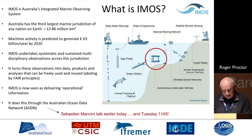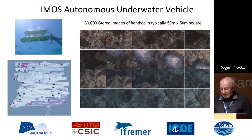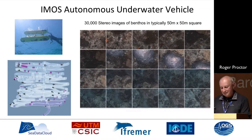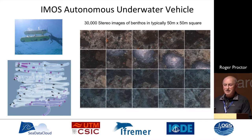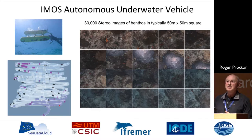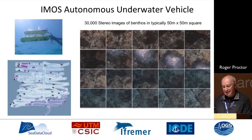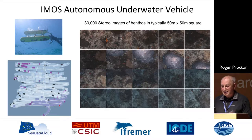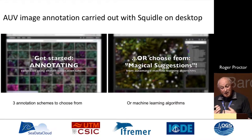IMOS has an autonomous underwater vehicle that's been running for seven or eight years now. It's done something over 500 different dives around Australia and is used predominantly within marine park structures to go back and repeat surveys to look at changes in benthic biodiversity. Each time it goes out, it measures stereo images of small quadrants, and then you've got to annotate all of this with a tool called Squidle.